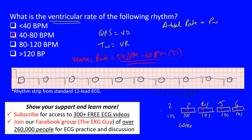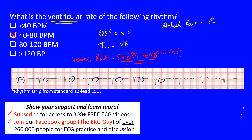There's one other method to find the rate, but it can only be used with regular rhythms. Find a ventricular complex that falls on a thick line, then find the next QRS complex and count the thick lines between them. In this case it's slightly more than five thick lines, giving us slightly less than 60 beats per minute — consistent with our earlier estimate.